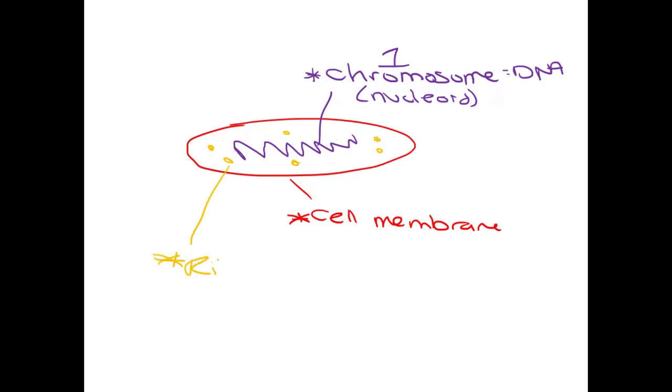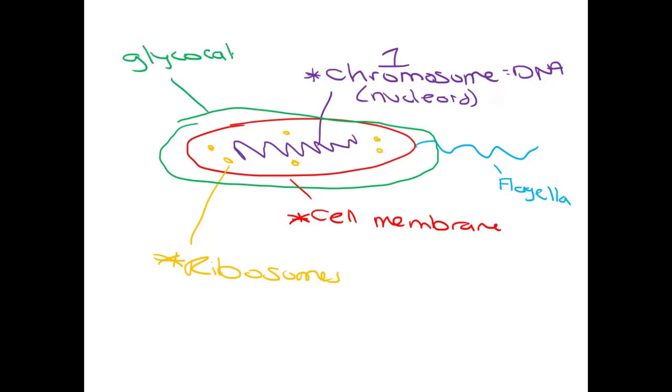There are some extra things that some bacteria have. Some bacteria have flagella that allows them to move or swim, but not all bacteria have it. Some bacteria have an extra coating around them, an extra layer of protection called a glycocalyx. This is kind of like a sticky coating, like how M&Ms have that extra sugary shell around them.